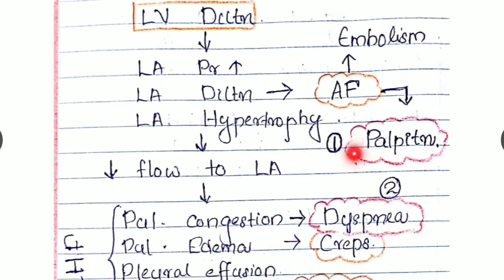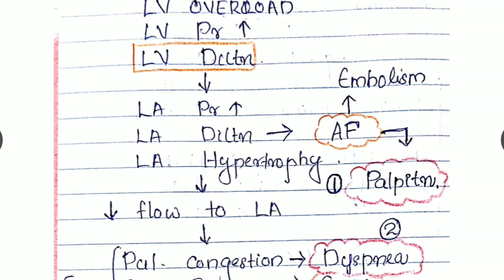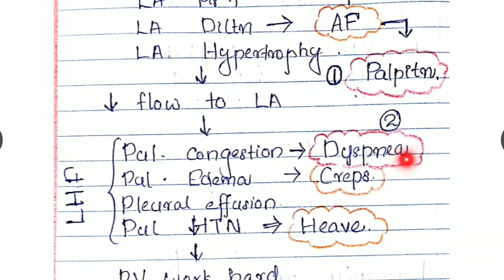So the patient may be presenting with symptoms like palpitation. Why? Because dilated left atria can predispose to atrial fibrillation which can cause embolism. This atrial fibrillation results in palpitation. Also the embolism can be present as various complications that we can be dealing with.